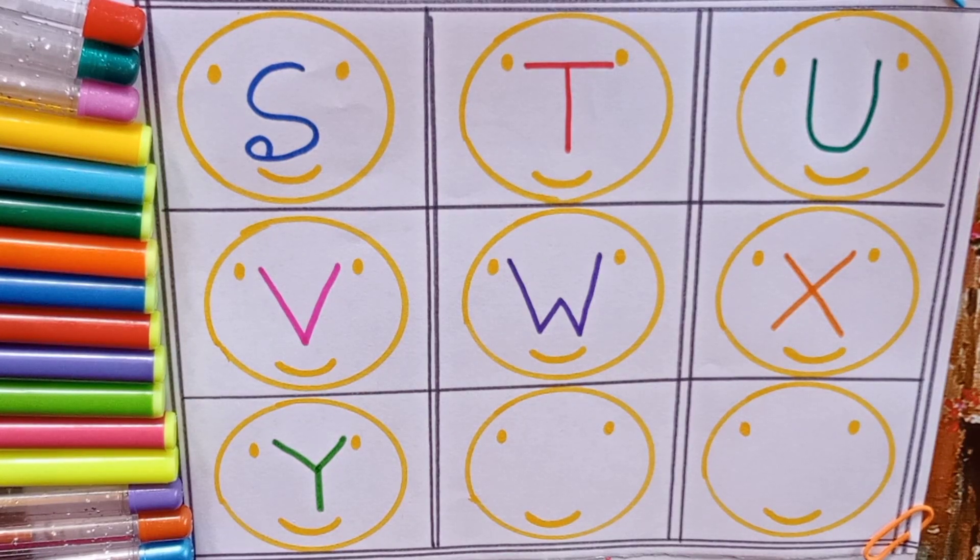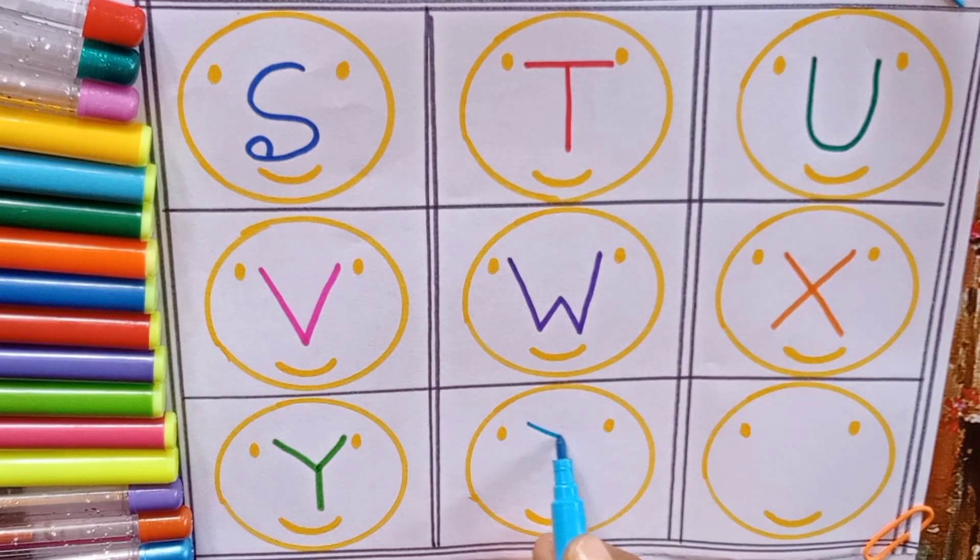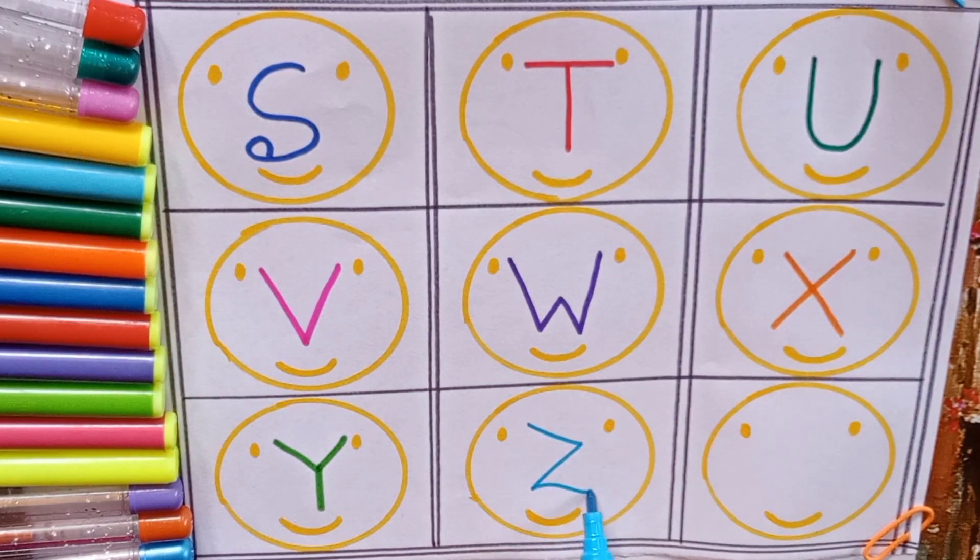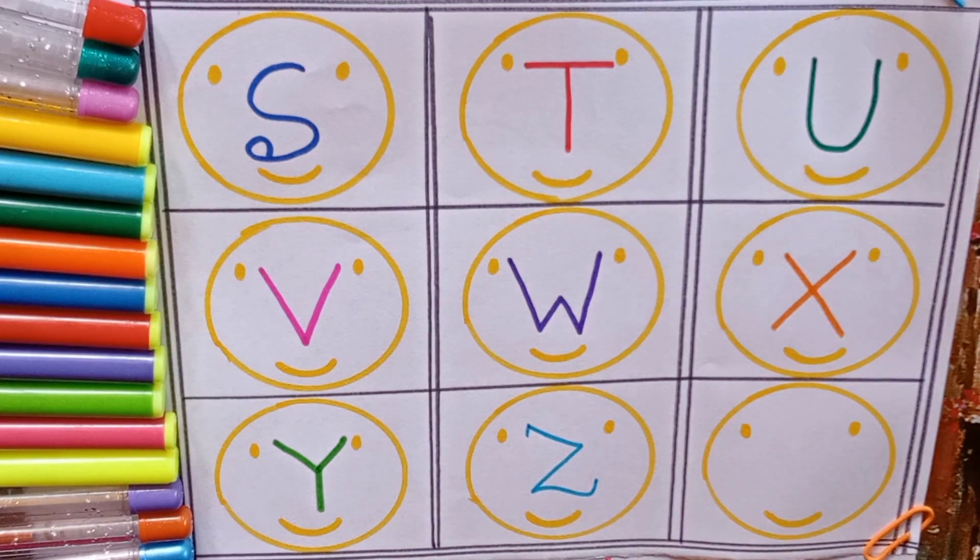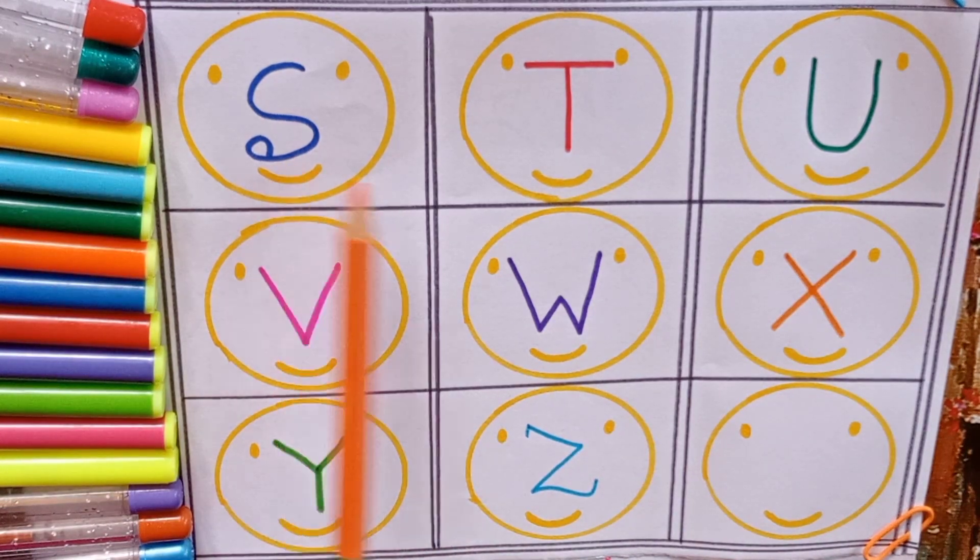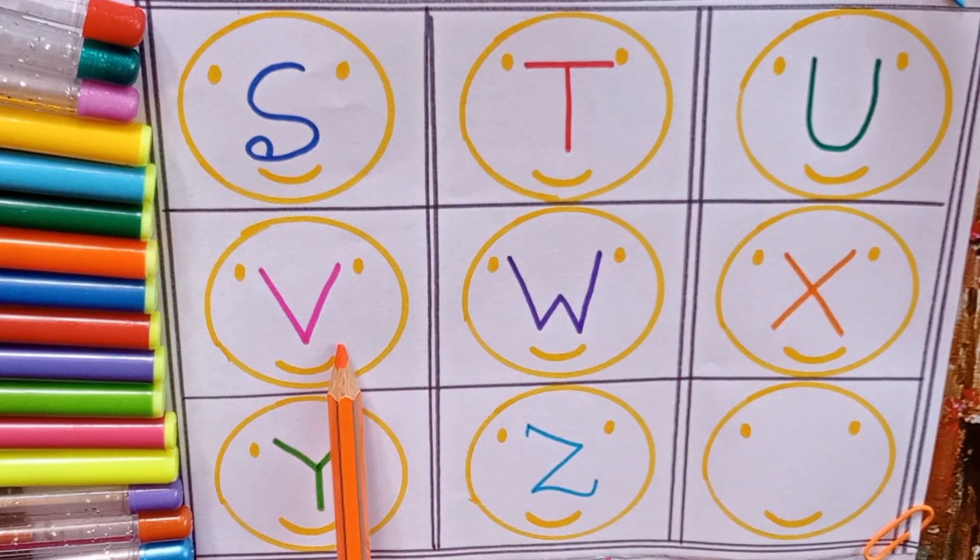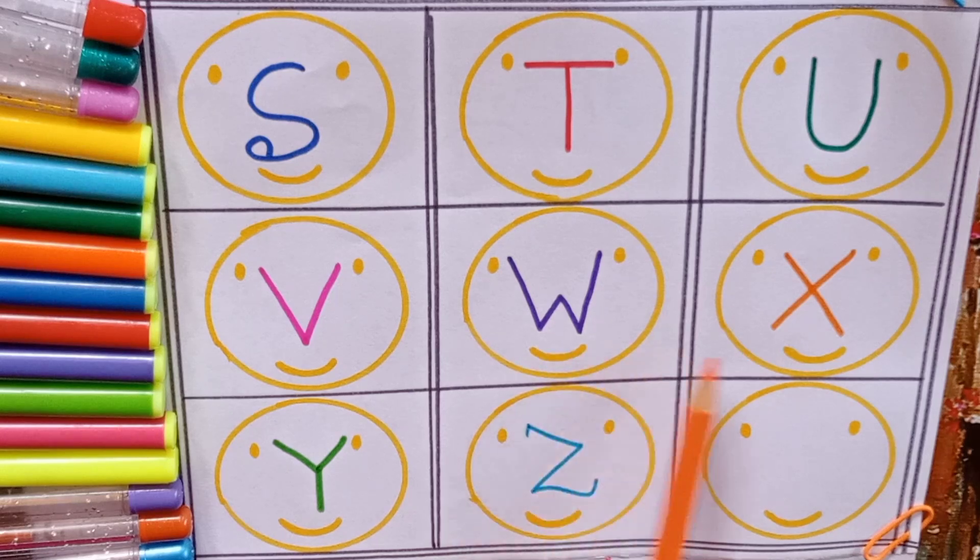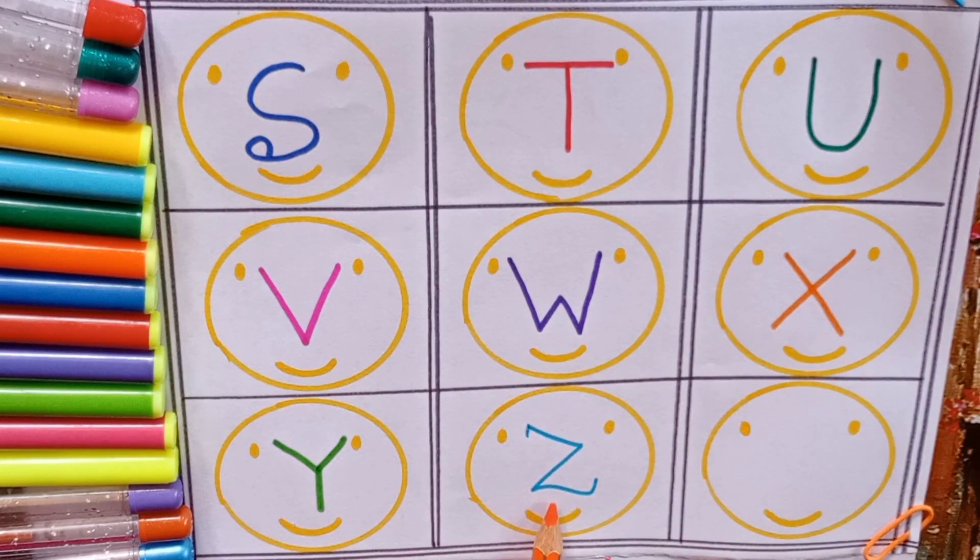Our last color is sky blue color: Z, Z for zipper, Z for also zigzag. Now say with me, it's S, T, U, V, W, X, Y, Z. Bye bye, kids! Keep learning and subscribe to my channel.